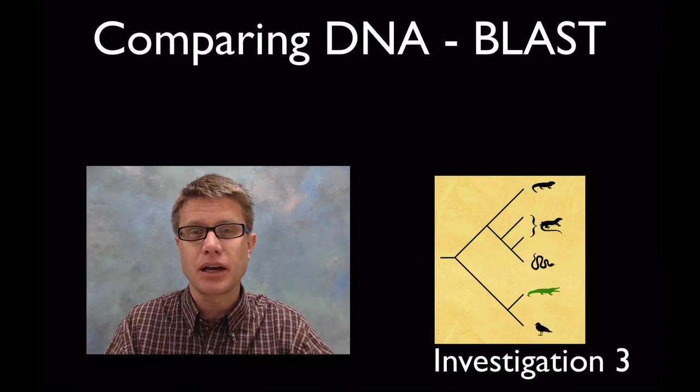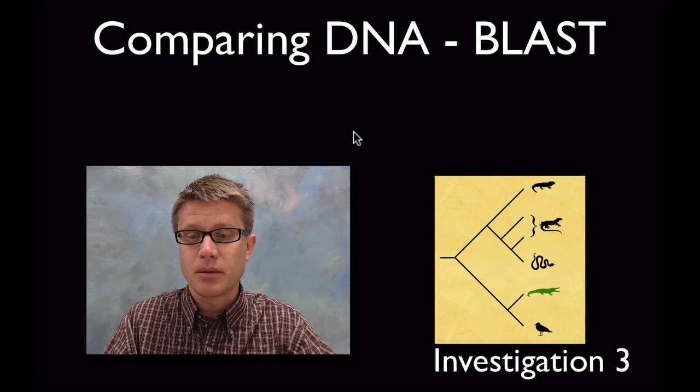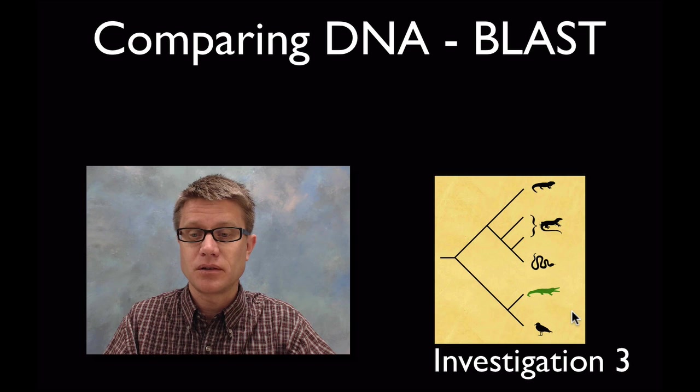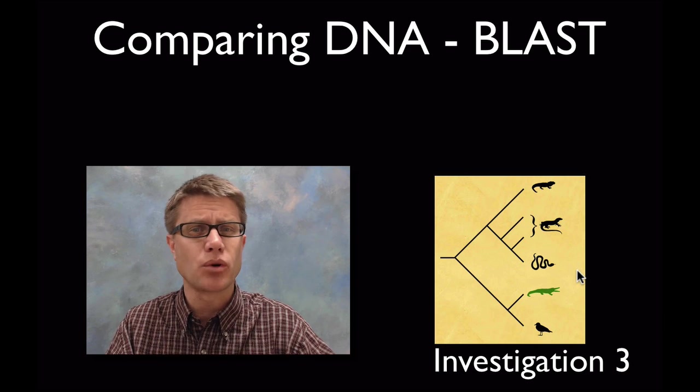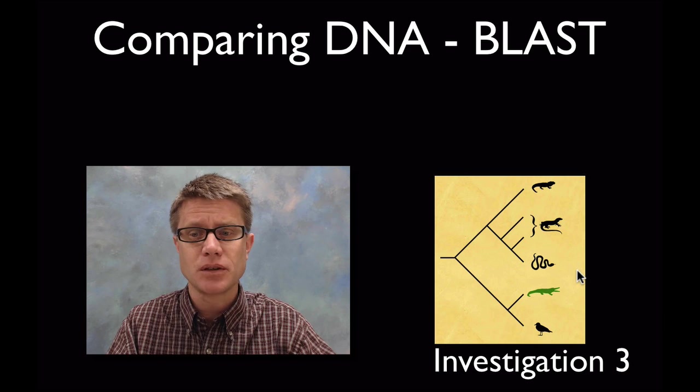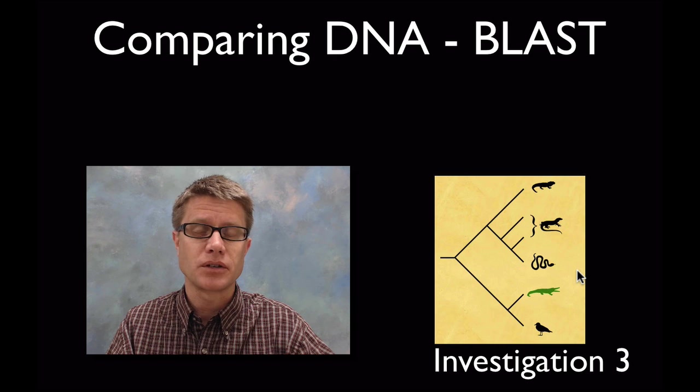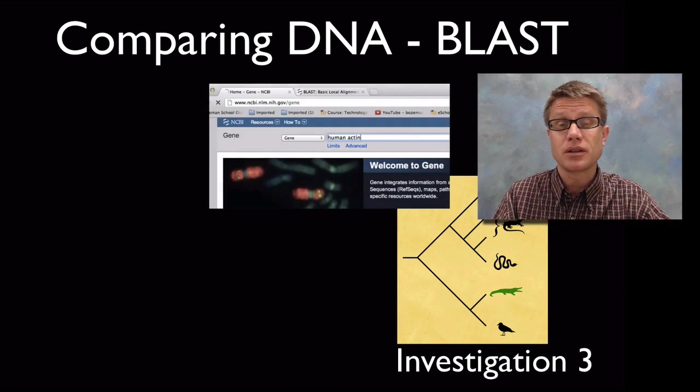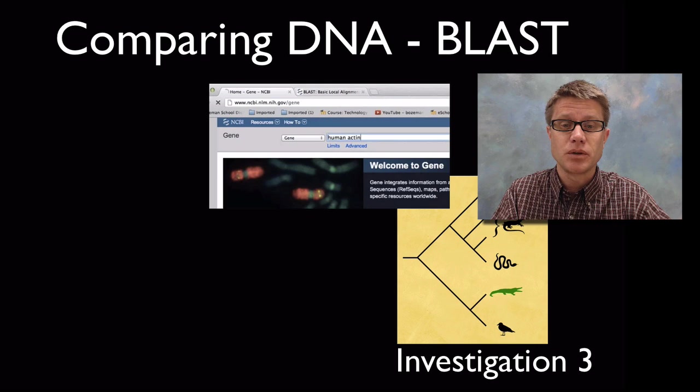Investigation three, what you're looking at is comparing DNA. This is a cladogram over here showing the evolutionary history of these organisms. What we used to use to do this was morphology, the study of shapes. We look at bone structure for example, but that's highly inaccurate. A much more accurate way to do it is to look at their DNA.